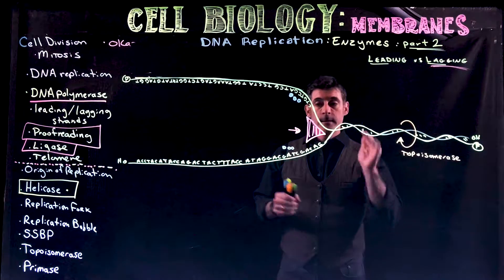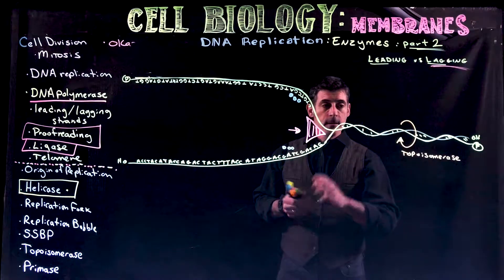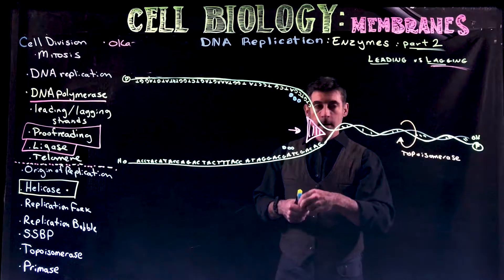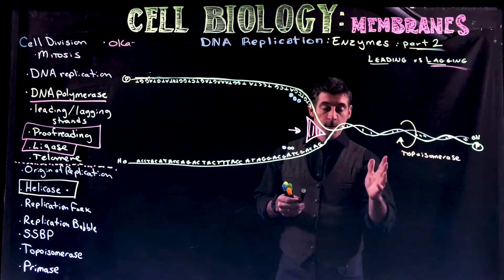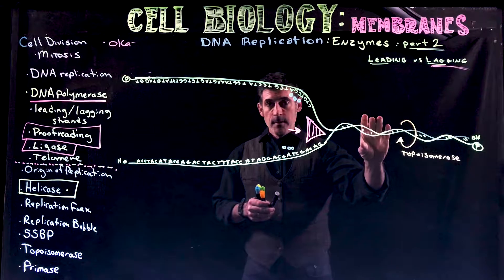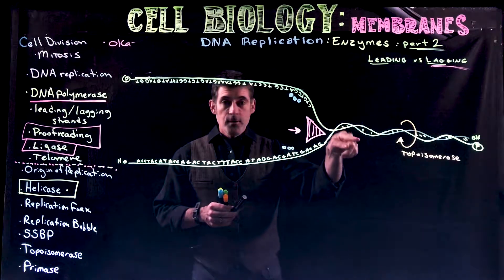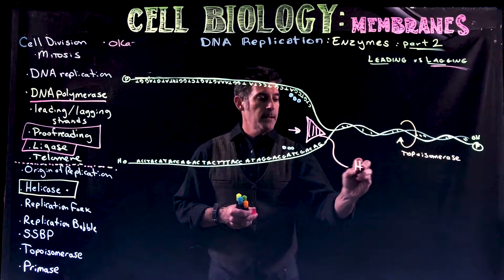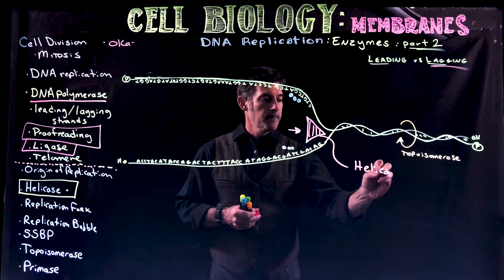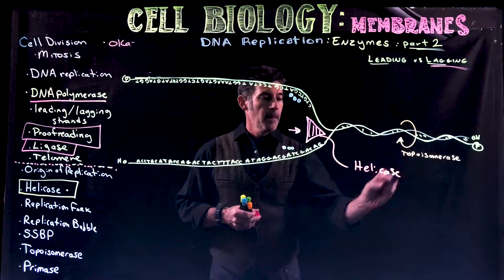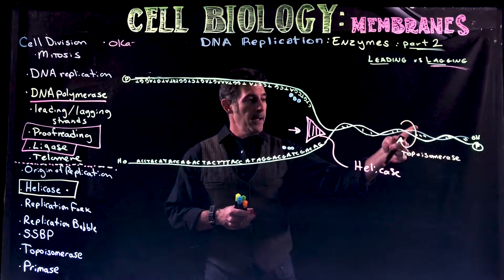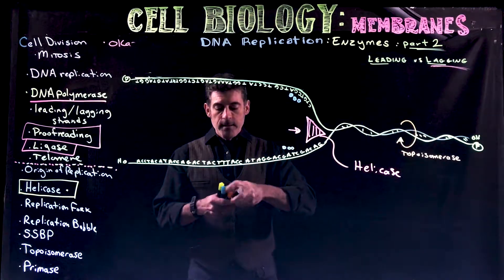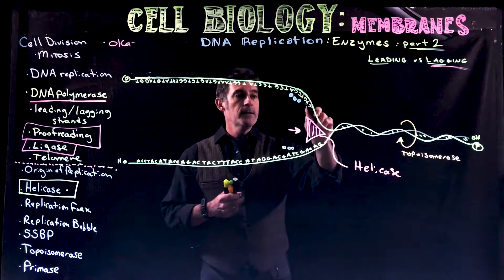We're continuing with DNA replication, taking a step back since this is the second part of the process. We have double-stranded DNA, two strands held together with hydrogen bonds. We have the enzyme helicase breaking the bonds, topoisomerase working ahead preventing supercoiling, and single-strand binding proteins coming in keeping the strands apart.